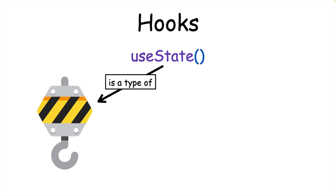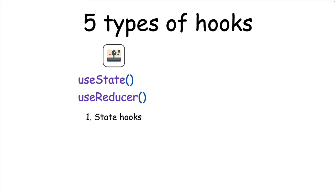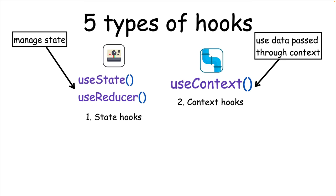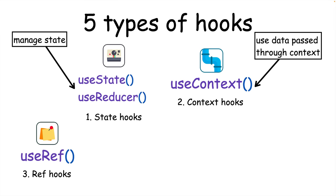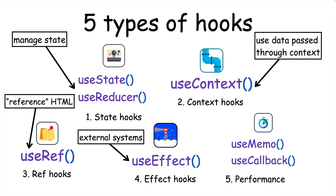useState is an example of a React hook, which allow us to hook into features such as state within function components. There are five main types of hooks: state hooks like useState and useReducer help you manage state within React components; context hooks such as useContext let you use data passed through React context; ref hooks such as useRef let you reference things like HTML elements; effect hooks like useEffect let you connect with external systems like browser APIs; and performance hooks like useMemo and useCallback can improve performance by preventing unnecessary work.